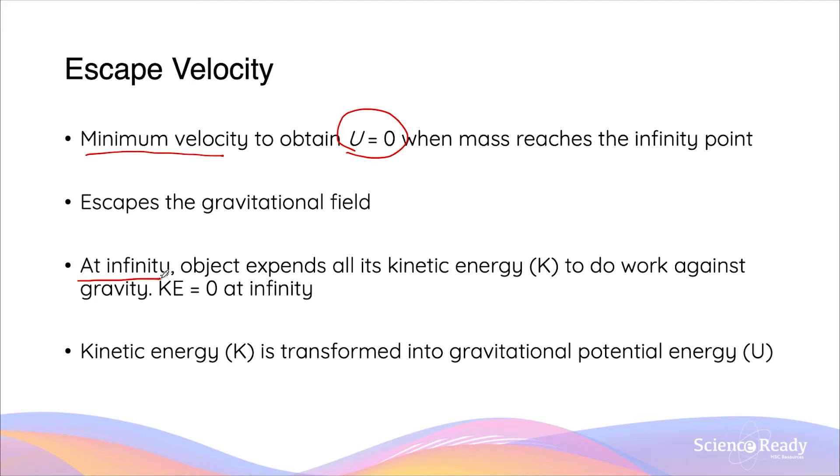When it reaches the infinity point, the object will be expending all of its kinetic energy. Remember, as it's moving further away from the gravitational field, its kinetic energy is decreasing and so is its velocity. It will expend all of its kinetic energy to do work against the gravity and this is the reason why its gravitational potential energy is increasing as this is happening.